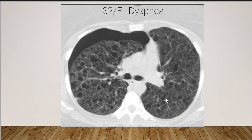As we see here, in LAM there are uniformly distributed thin-wall cysts, and these cysts are more or less the same size. It involves the costophrenic angle. However, in histiocytosis, the costophrenic angle is not involved, the cysts are irregular in size, and we see nodules. In histiocytosis, the cysts predominate in the upper lobes.